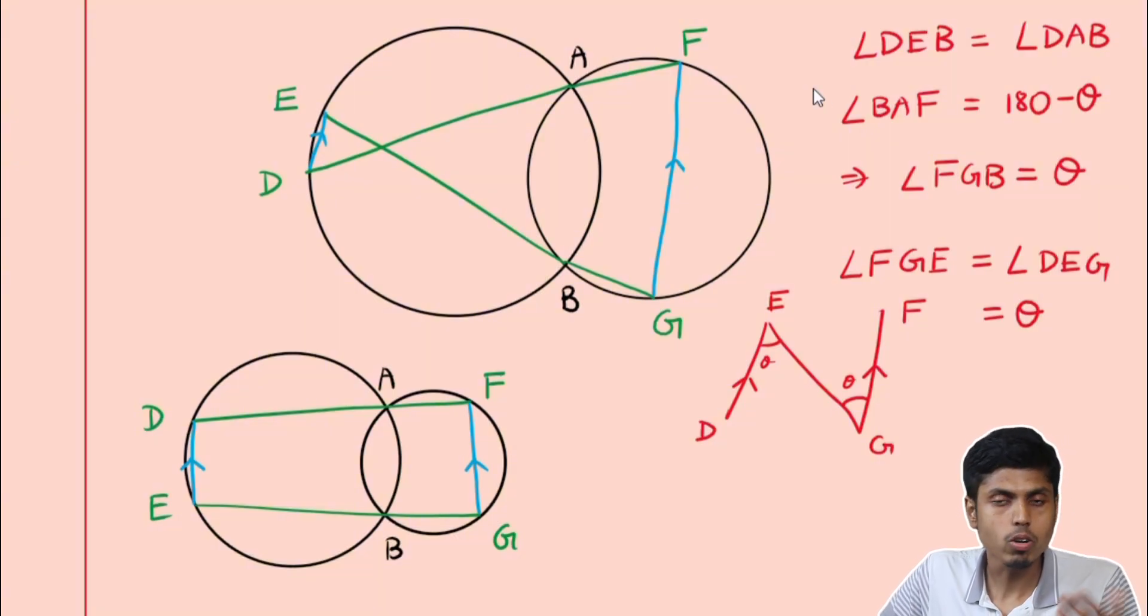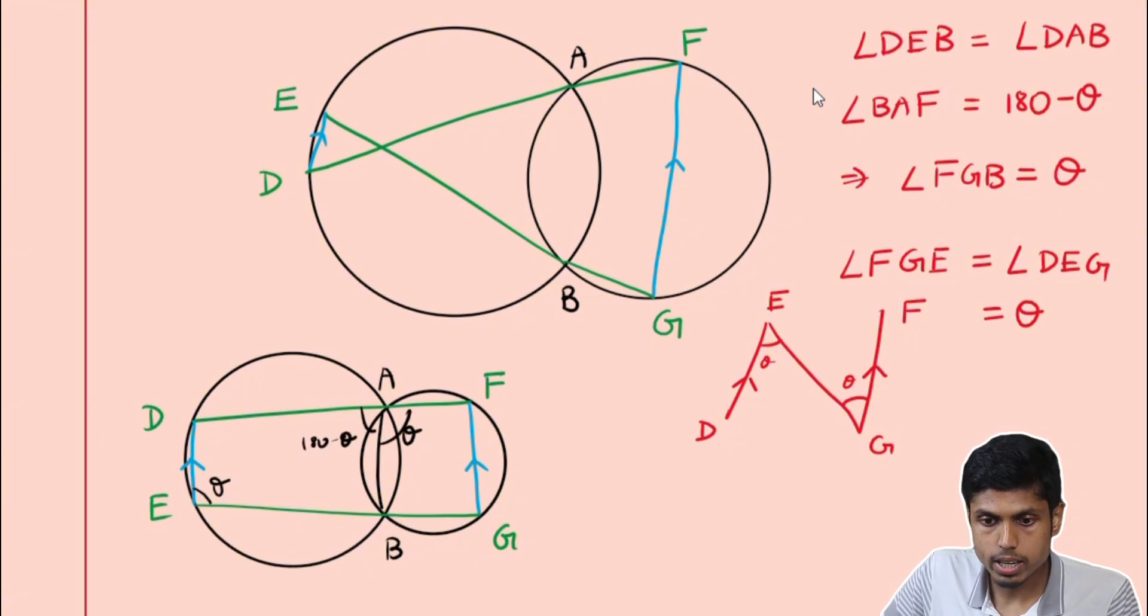A proof that is slightly varied would work. For example, here DEB is not equal to DAB as they are on opposite sides of DB, but it is supplementary. So if you have this as theta, then this would be 180 minus theta. This is theta making this 180 minus theta. So you see that interior angles in the same side of parallel lines are supplementary, making them truly parallel.